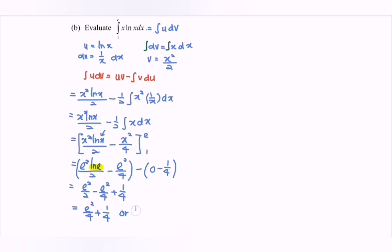We can write this as 1 over 4 multiplied by the quantity e squared plus 1, or by referring to the calculator, we have approximately 2.097, or we may write this as 2.10.